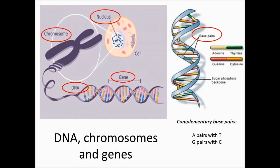A or adenine pairs with T which is thymine, and G guanine pairs with C which is cytosine. This is called complementary base pairing. The bases fit together like a locking key due to their shape.